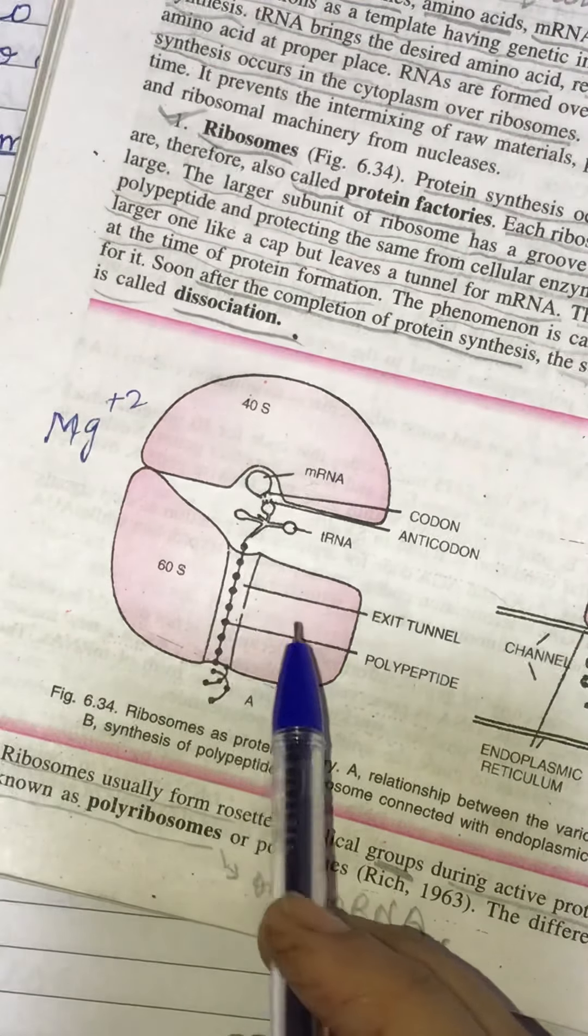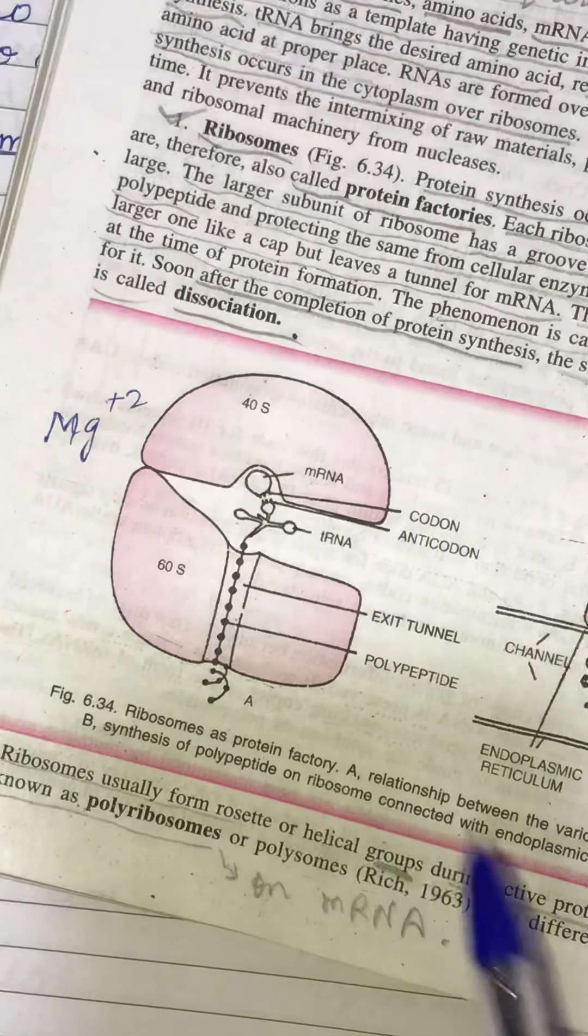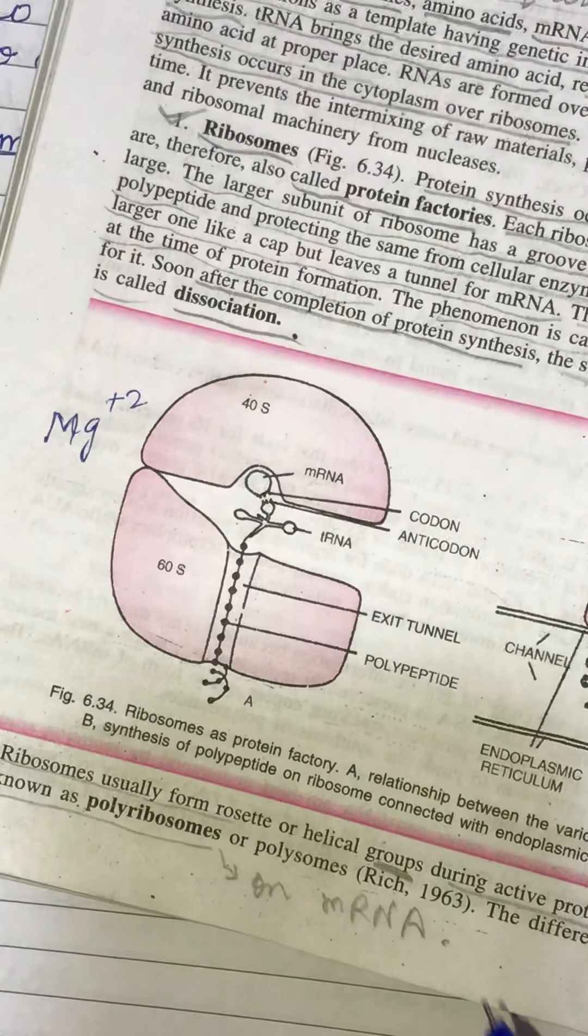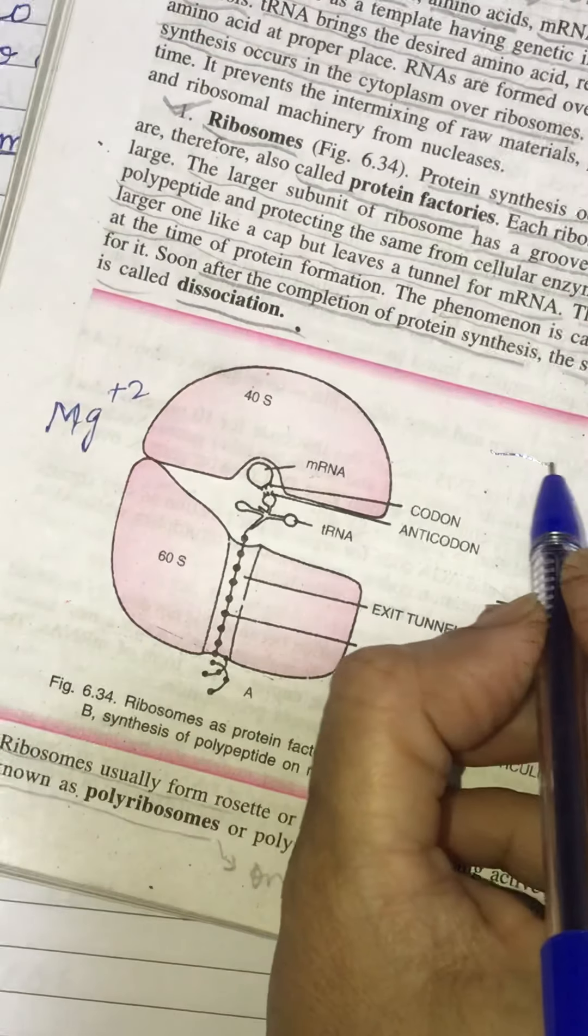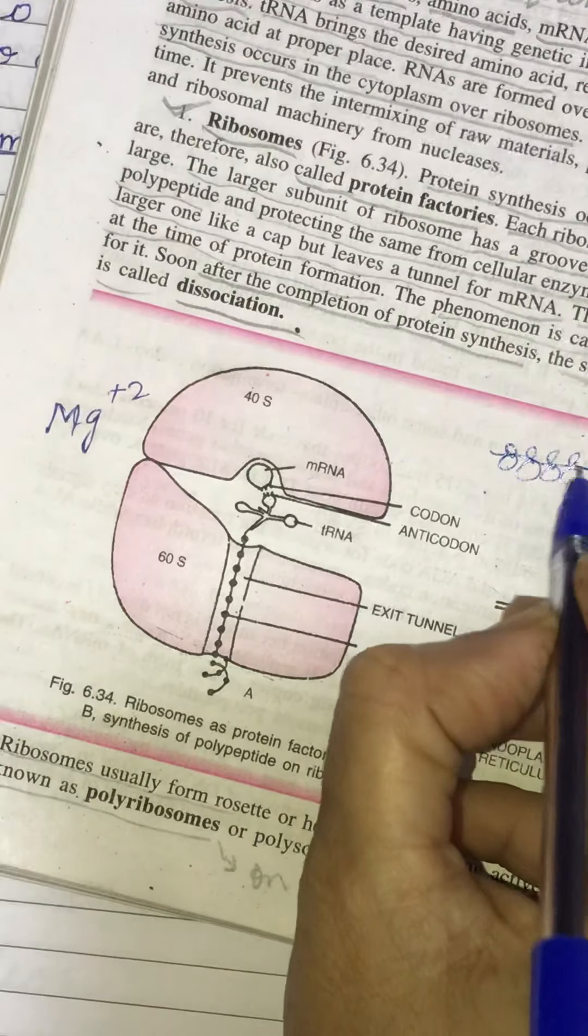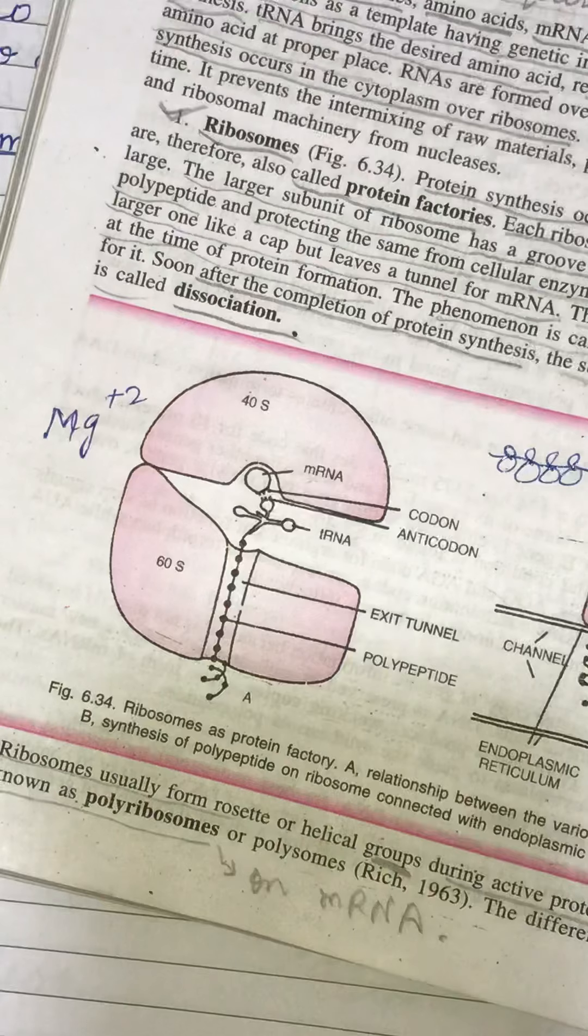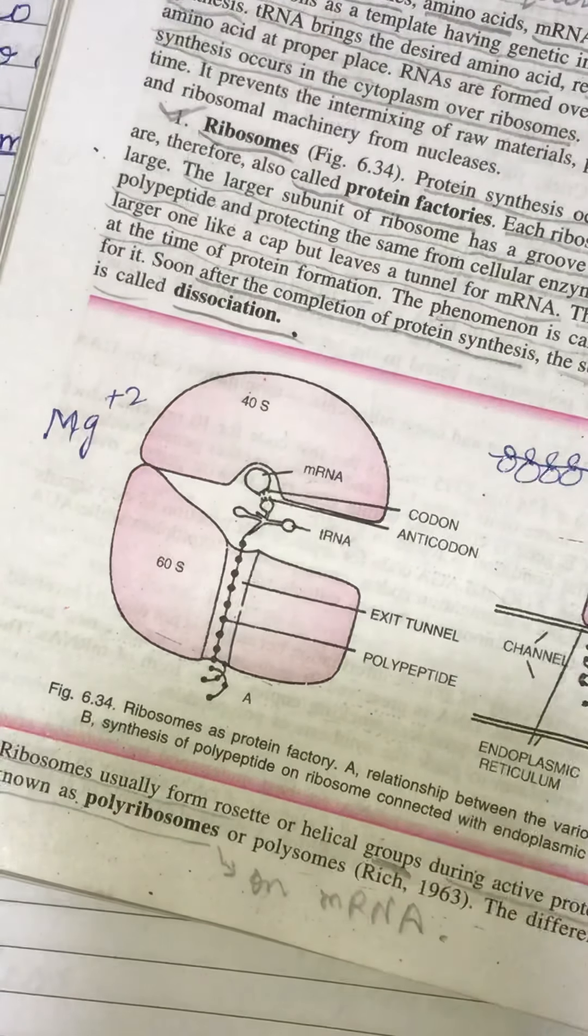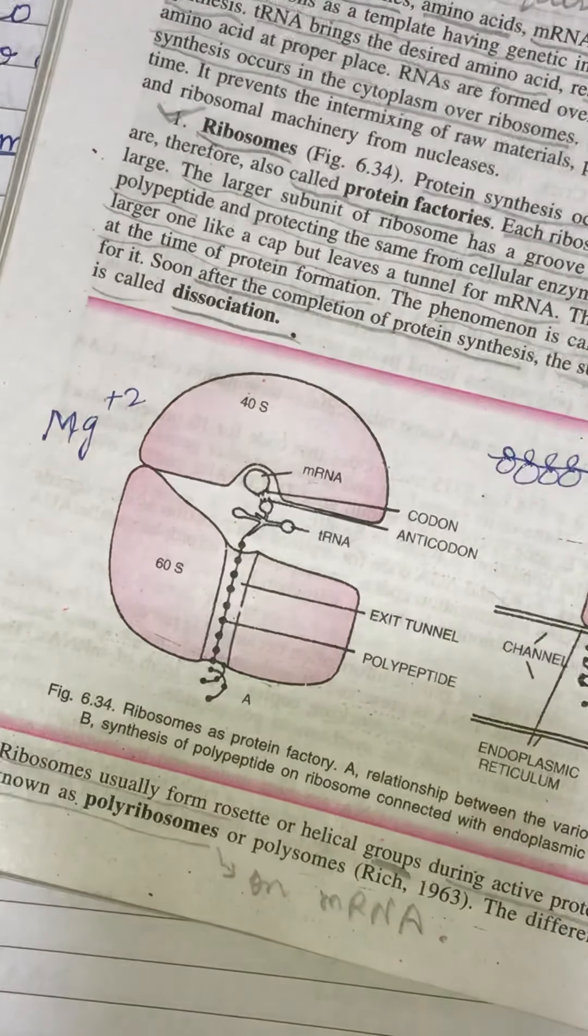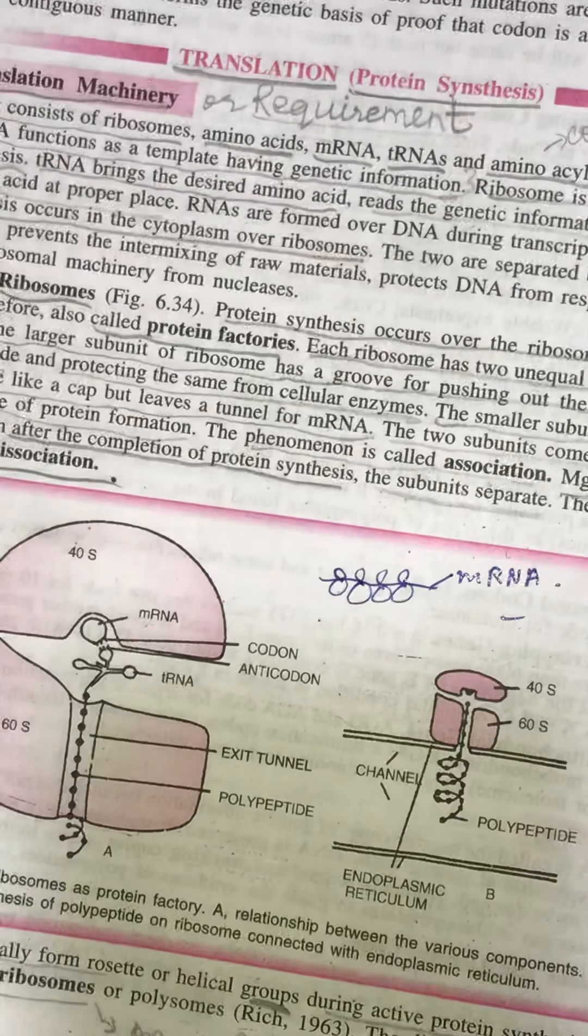Now sometimes these ribosomes form rosette or helical groups during active protein synthesis. When there is too much protein synthesis in the cells, then they form the polyribosomes. Now you can see if I say this is the mRNA like this. During they form a helical groups. So they are called the polyribosomes. This is mRNA. So they form over the mRNA. So this is about the ribosomes.